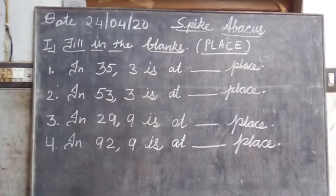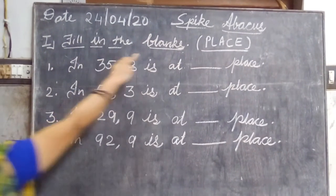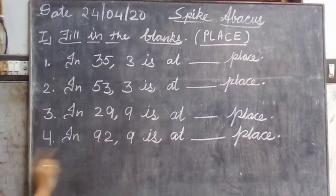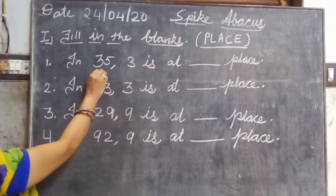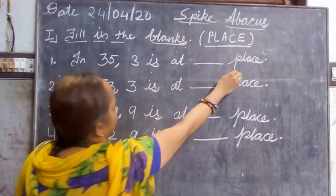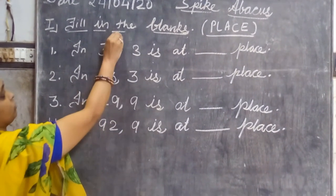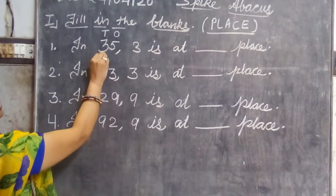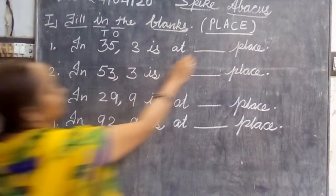Now see here in this. Read the question: fill in the blanks. Here we will write the place of a digit. Read here in the first question: in thirty-five, three is at dash place. So we will write here ones and tens. Now tell me where is the three? Below tens. So we will write here in the blank: tens.